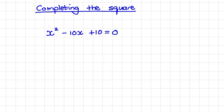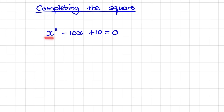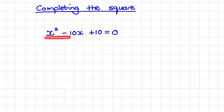In this tutorial, we'll learn how to solve for x by completing the square. Here we have an equation that is x squared minus 10x plus 10 equal to 0. And normally when we solve for x, we would try to factorize this trinomial.